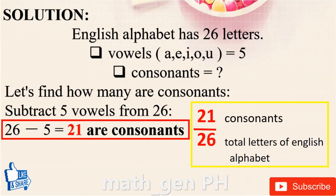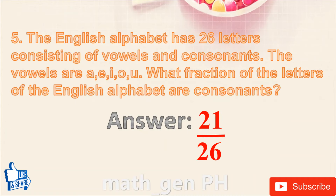Solution: The English alphabet has 26 letters. There are 5 vowels: A, E, I, O, U. To find the number of consonants, subtract: 26 − 5 = 21. So 21 letters are consonants. The fraction of consonants is 21 out of 26. Answer: 21/26.